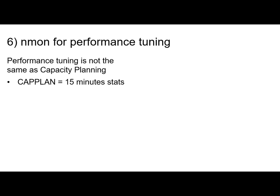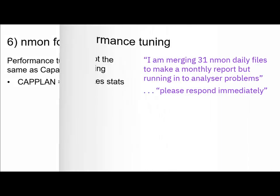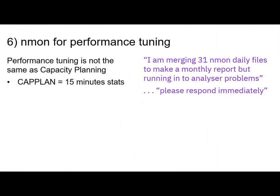Instead of capturing data every couple of seconds to a minute or so, capacity planning is at a much slower level — so they don't want so much data. 15-minute stats is probably a bit fast for capacity planning. You'll get 96 of those every day. I quite often get asked by systems administrators: 'I've suddenly been asked to merge 31 daily Nmon files to make monthly reports for my manager, and the analyzer is causing all sorts of problems.'